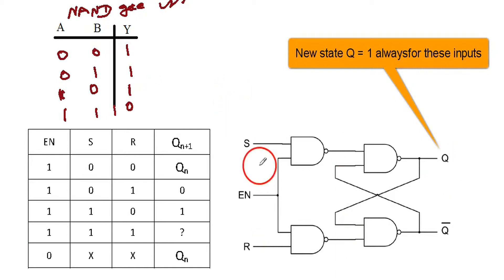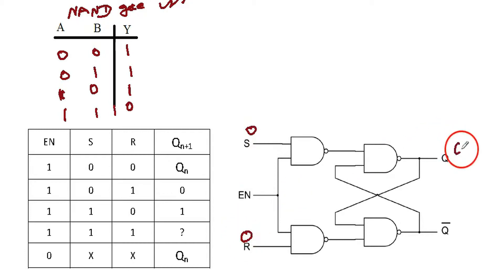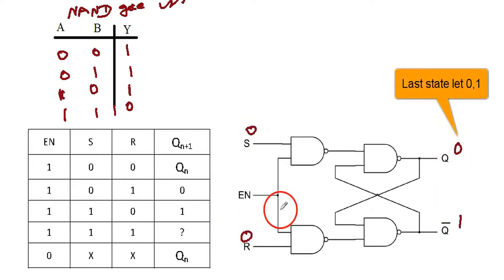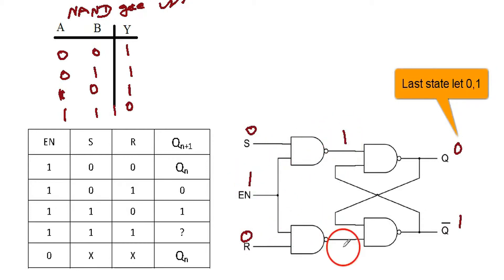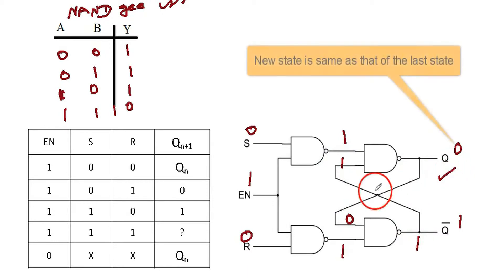Now with S=0, R=0 again, let the previous state be 0,1 and the clock is high. So 0,1 NAND gate gives 1; and 1,0 gives 1. The 0 comes here, 1 is on the line, 1,1 gives 0 — the previous state exists again. Whatever the previous state, it will be retained when S=0, R=0.